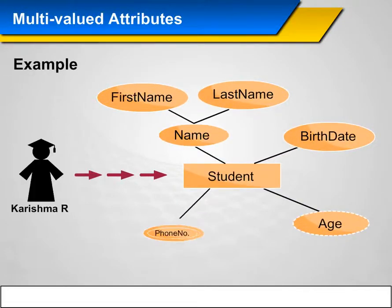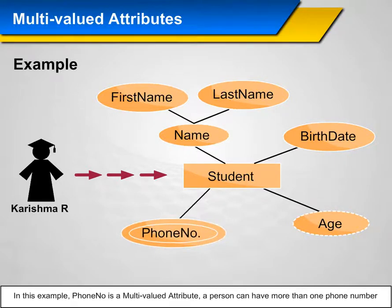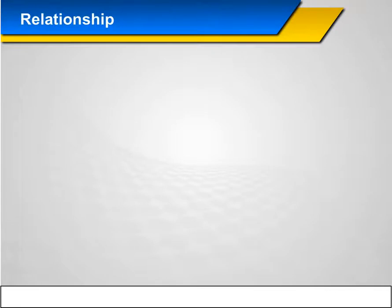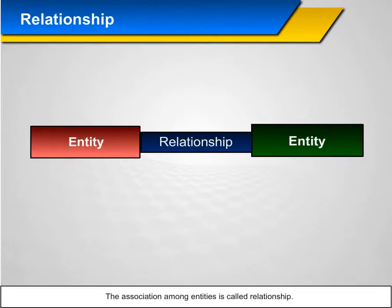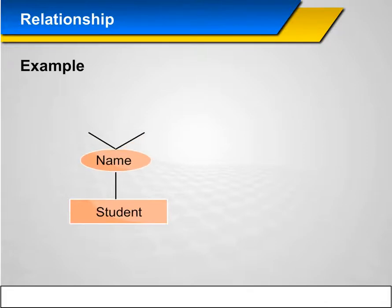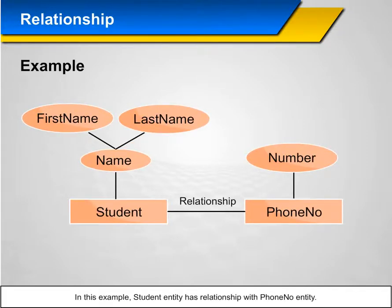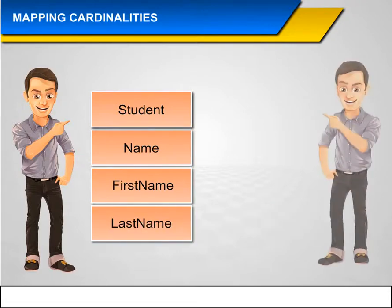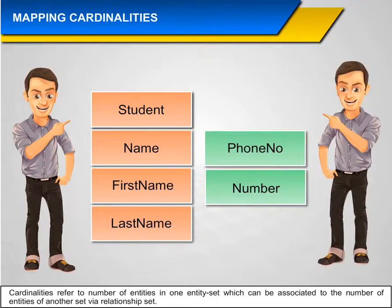Example of Multi-valued Attributes: Phone number is a multi-valued attribute — a person can have more than one phone number. Relationship: The association among entities is called a relationship. Example: The student entity has a relationship with the phone number entity. Mapping Cardinalities: Cardinalities refer to the number of entities in one entity set which can be associated with the number of entities of another set via a relationship set.